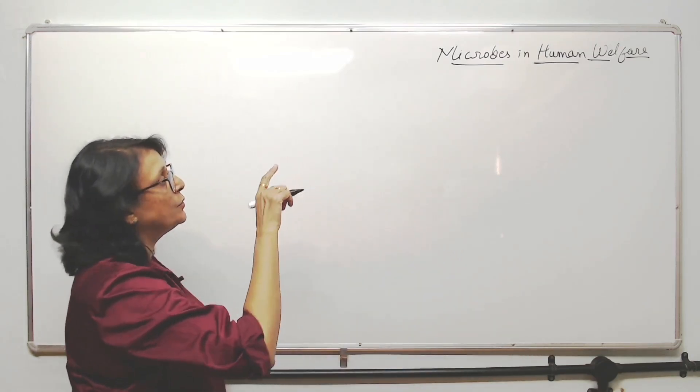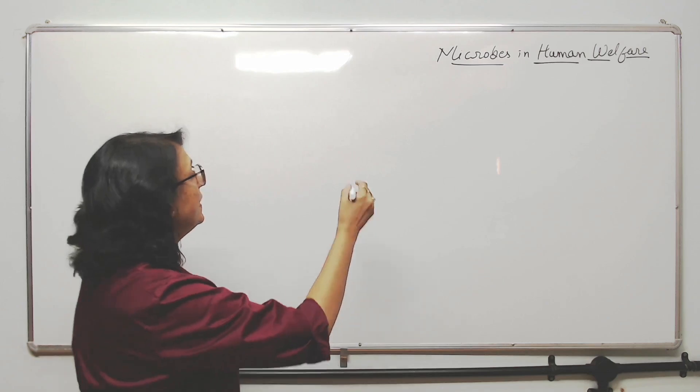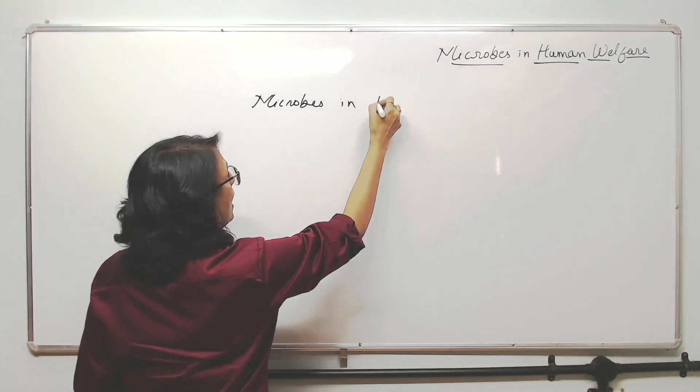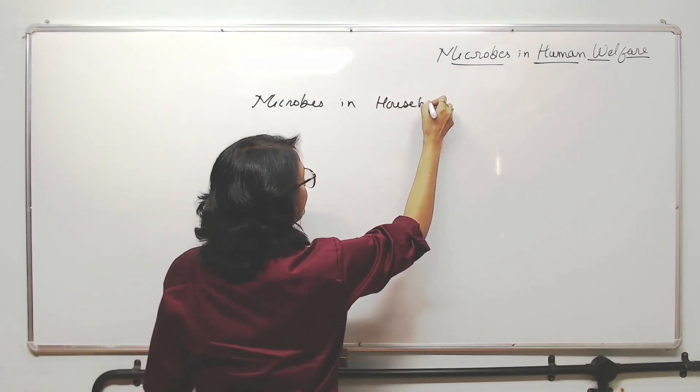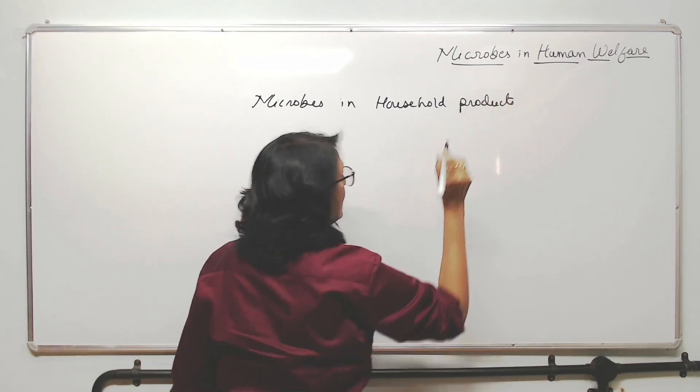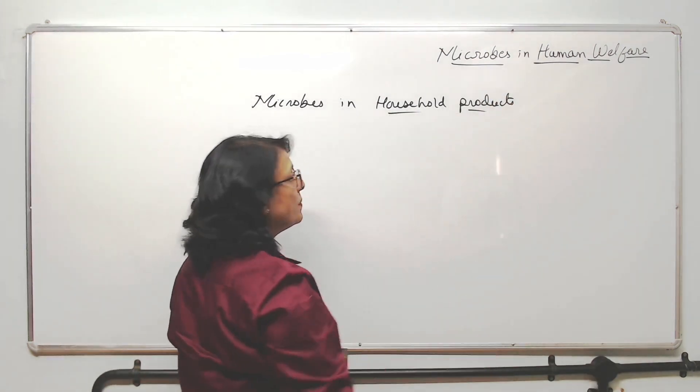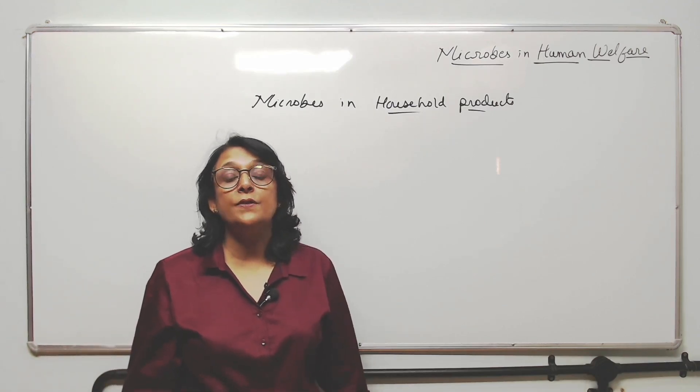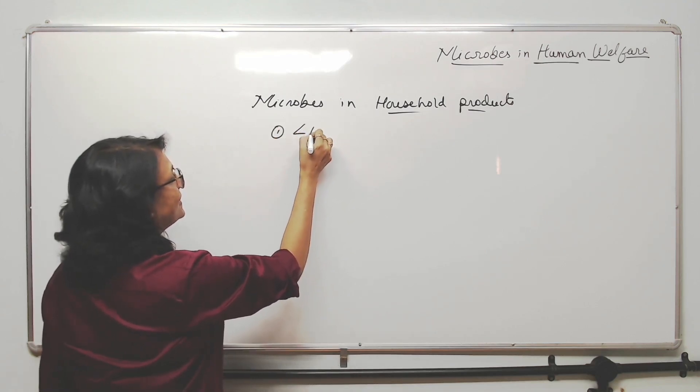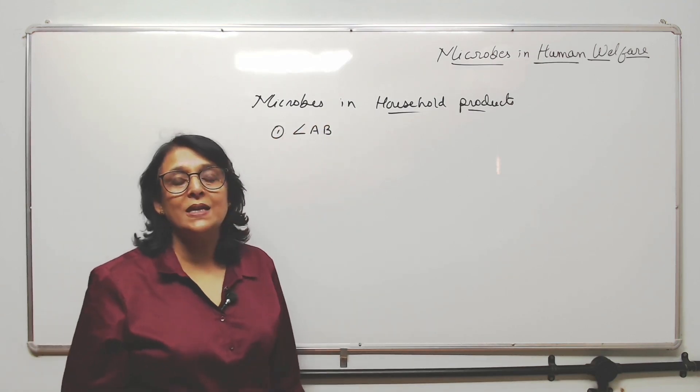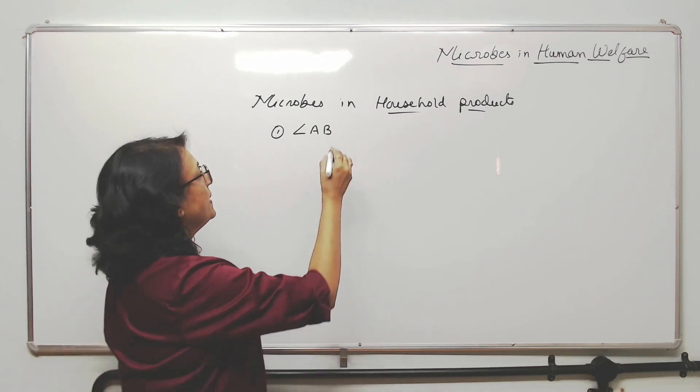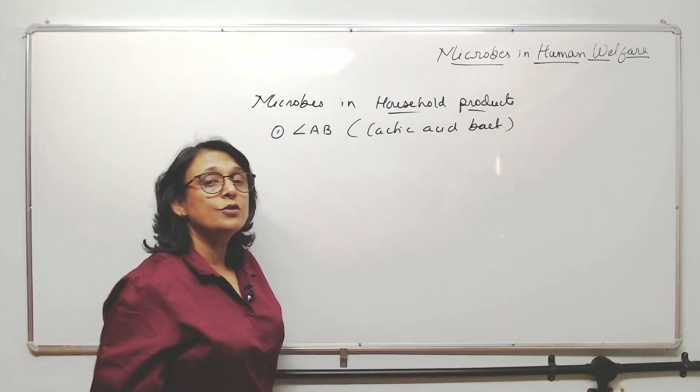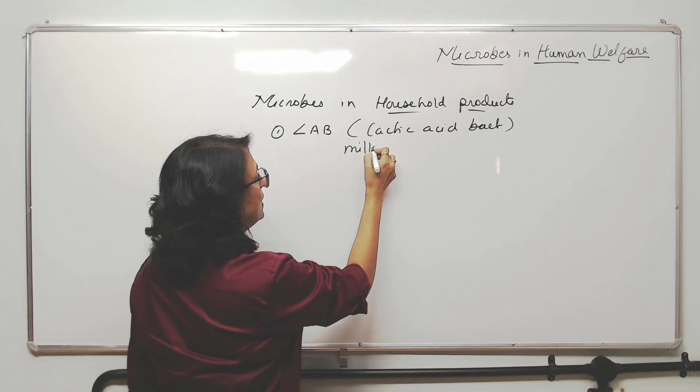The first heading under which we discuss microbes in human welfare is in household products. Household products means we are using so many microbes in our daily activity in our house and we don't even realize it. The first one is lactic acid bacteria, normally known as LAB, and we use them to convert milk into curd.